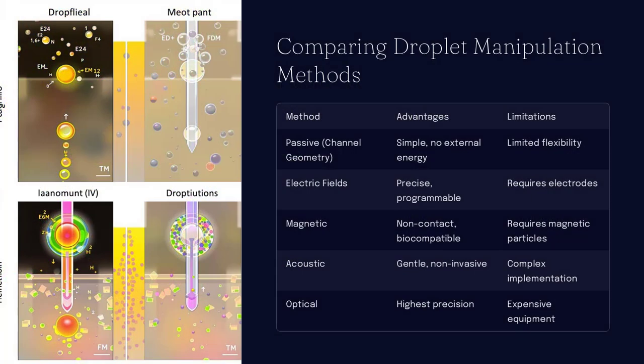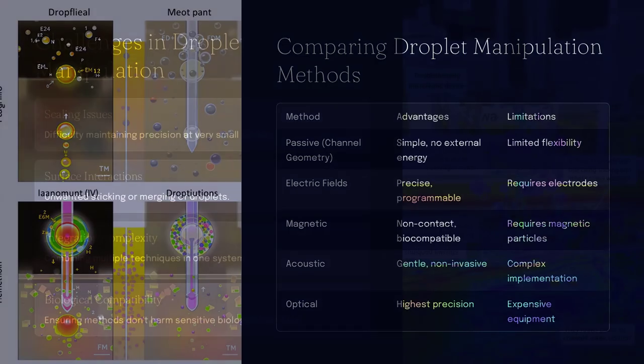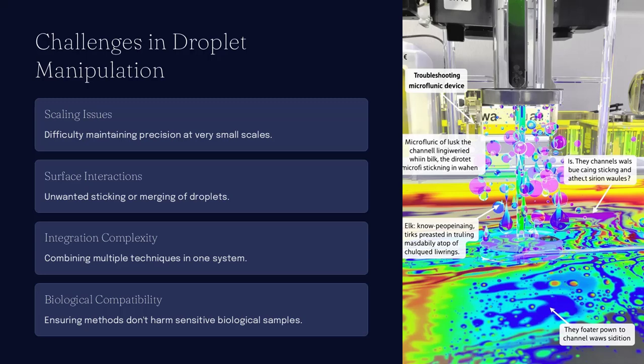Beyond lab work, these techniques have real-world applications. In medical diagnostics, droplet-based PCR, polymerase chain reaction, can detect pathogens with extreme sensitivity.